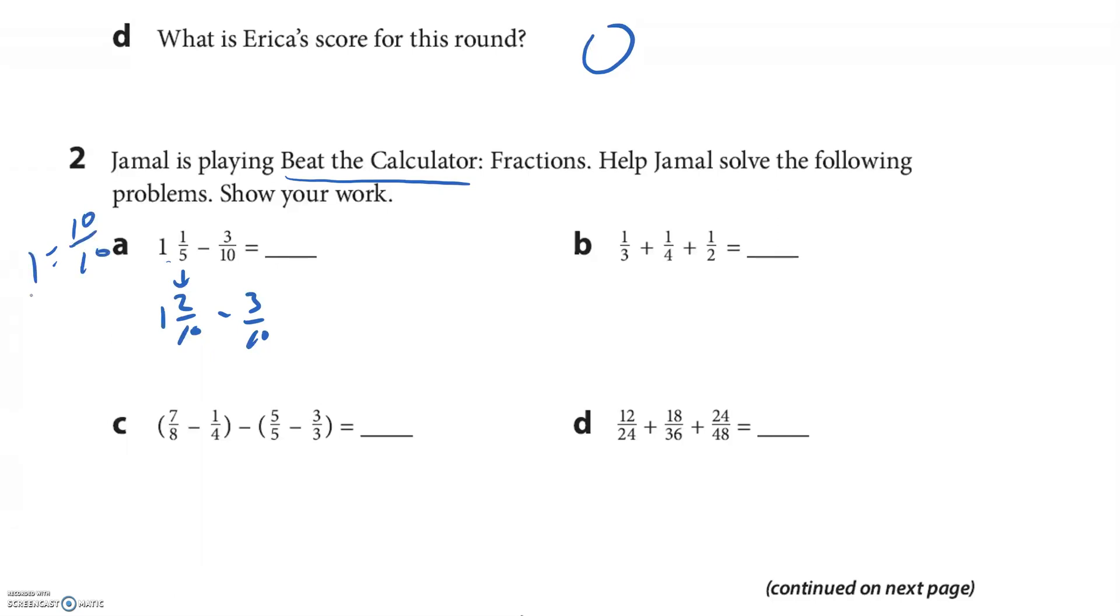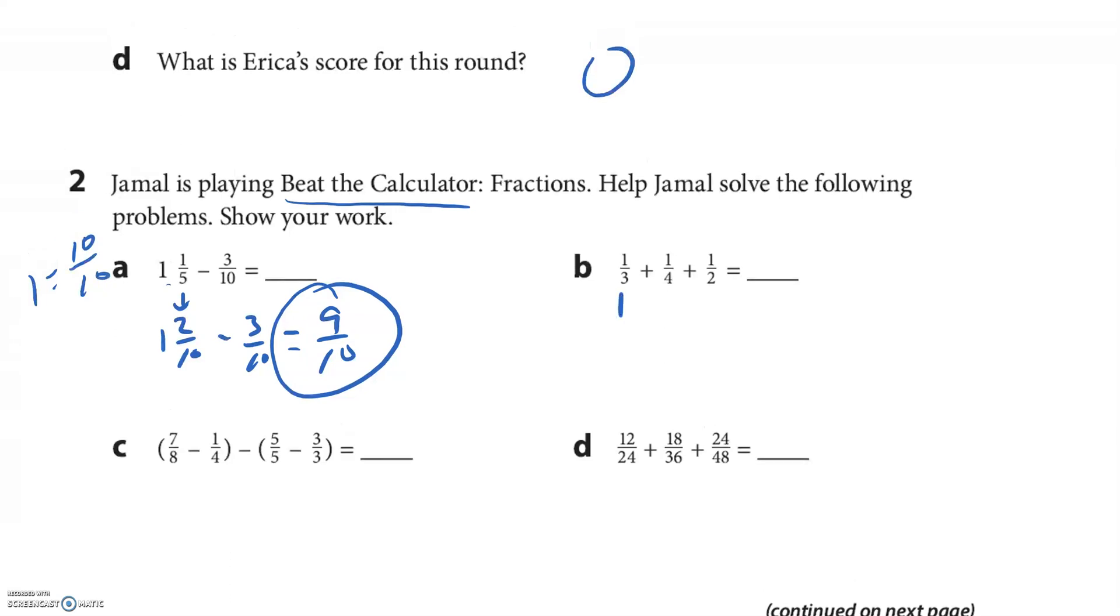So I know one whole is ten-tenths. So if I try and take three-tenths away from two-tenths, I have to actually go take one from the whole, so I think that's nine-tenths.